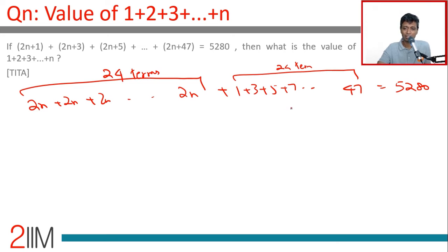The first 24 odd numbers will add up to 24². 1+3+5 is 3², 1+3+5+7 is 4², 1+3 is 2². And so 2n into 24...